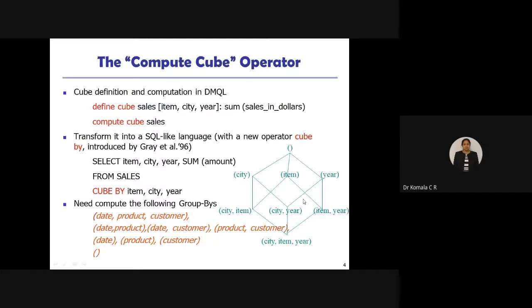This is shown in an example using three dimensions: city, item, and year. At the apex level, zero dimensions are specified. At the first level, we have city, item, and year individually. At the second level, pairs are mapped: city-item, city-year, and item-year. At the 3D level, all three dimensions are combined.